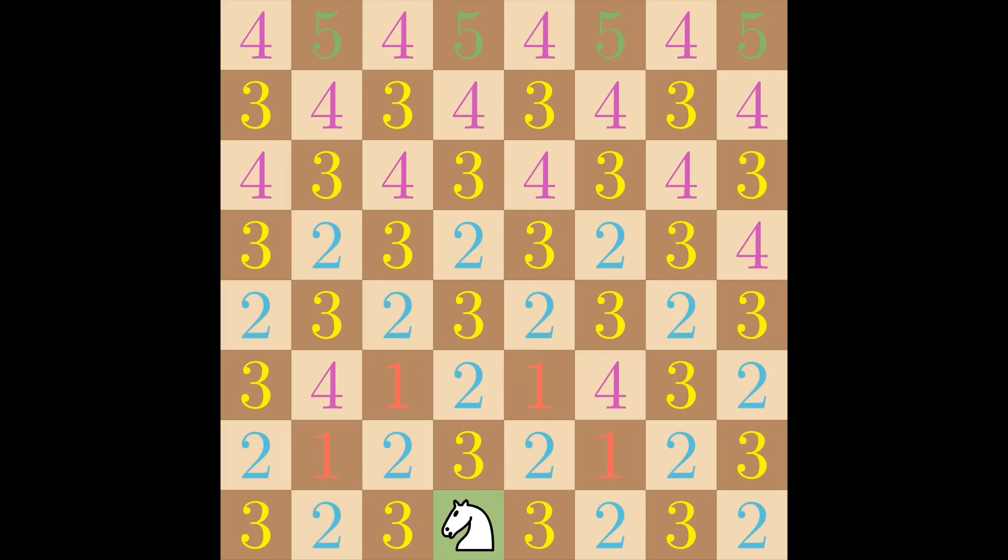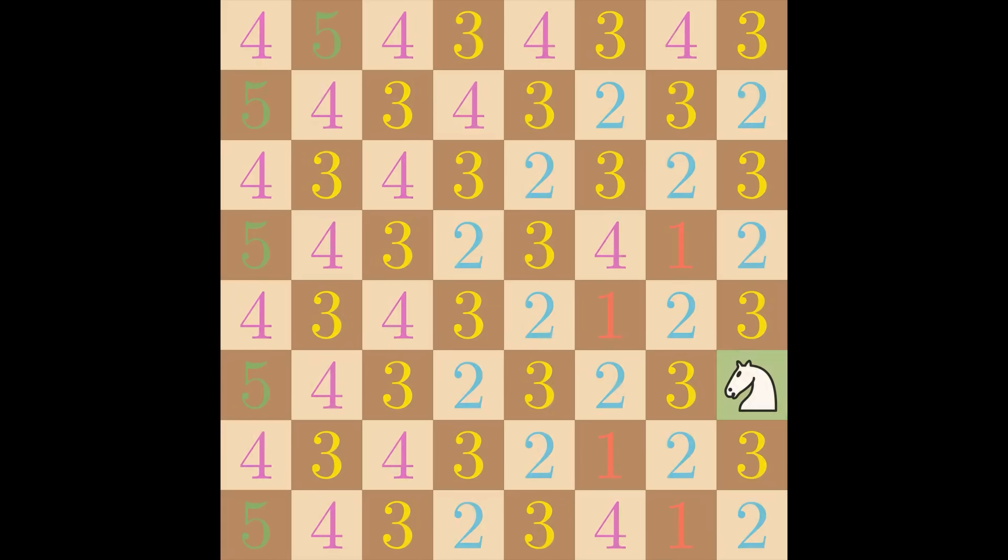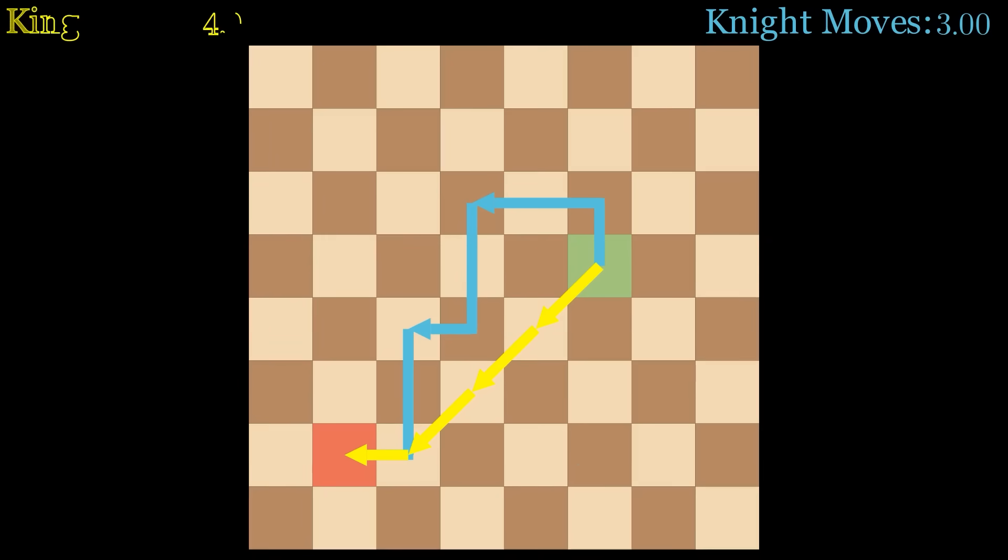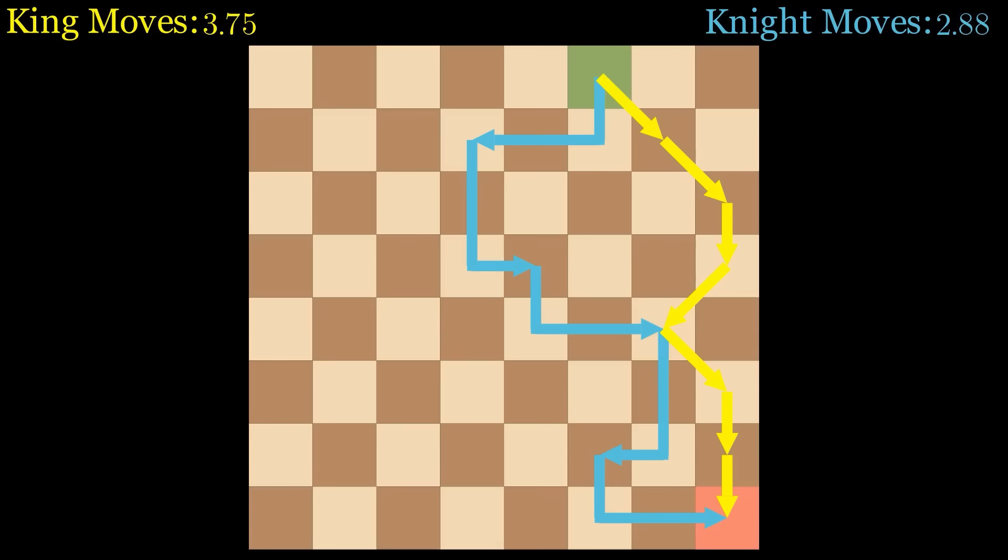Okay so how much faster is the knight than the king exactly? If I choose a starting point and an ending point at random we can count the number of knight moves and the number of king moves that are required. And if I do this over all 64 times 63 possible starting and ending pairs we get a final average number of king moves being 3.75 and the average number of knight moves being 2.88 for a final ratio that the knight is approximately 1.3 times faster than the king.